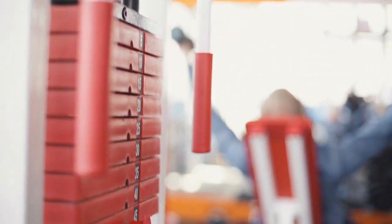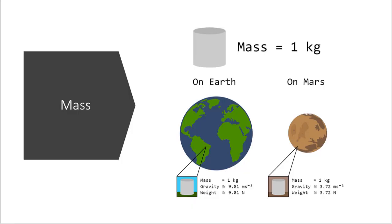Now let's dive into the topic. Mass — what is mass? It is a direct measure of the amount of material in an object, and therefore how hard it is to move, sometimes called inertia, and how strong an attractive force it exerts due to that mass — its gravity.